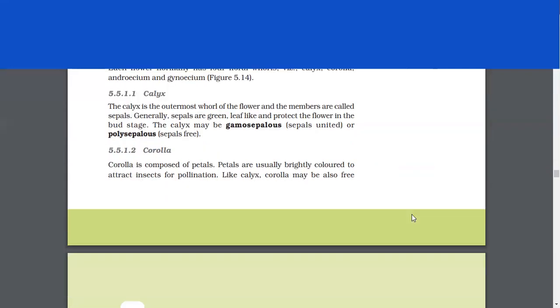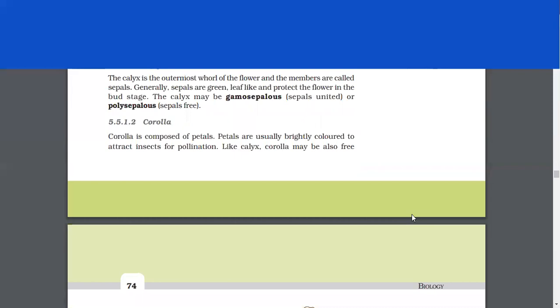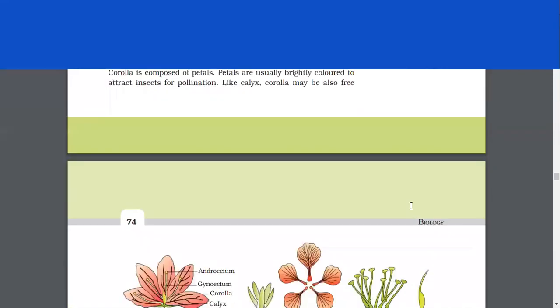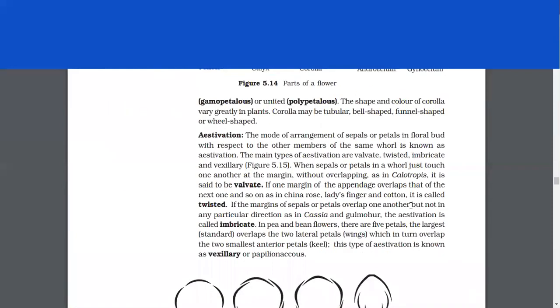Corolla. Corolla is composed of petals. Petals are usually brightly colored to attract insects for pollination. Like calyx, corolla may be also free or united. The shape and color of corolla vary greatly in plants. Corolla may be tubular, bell-shaped, funnel-shaped, or wheel-shaped.